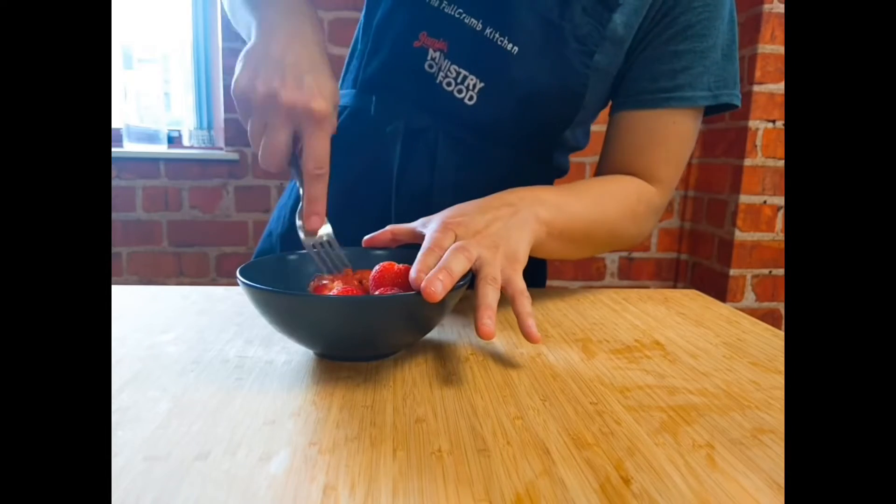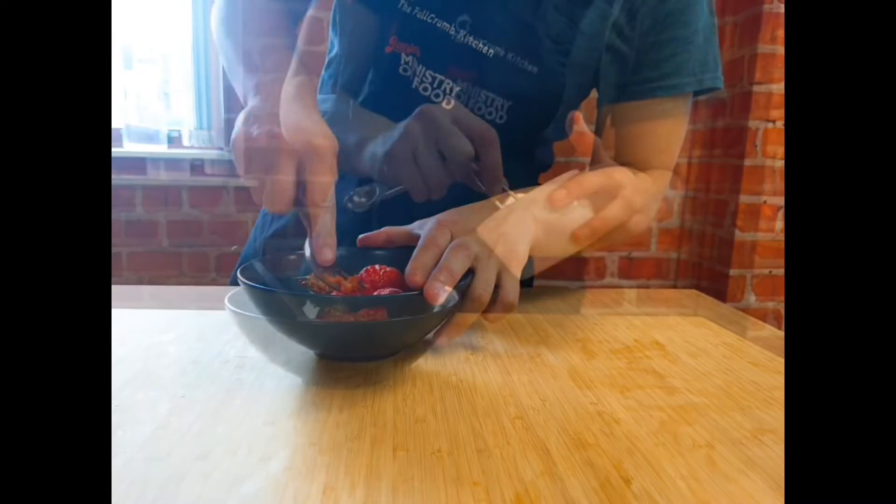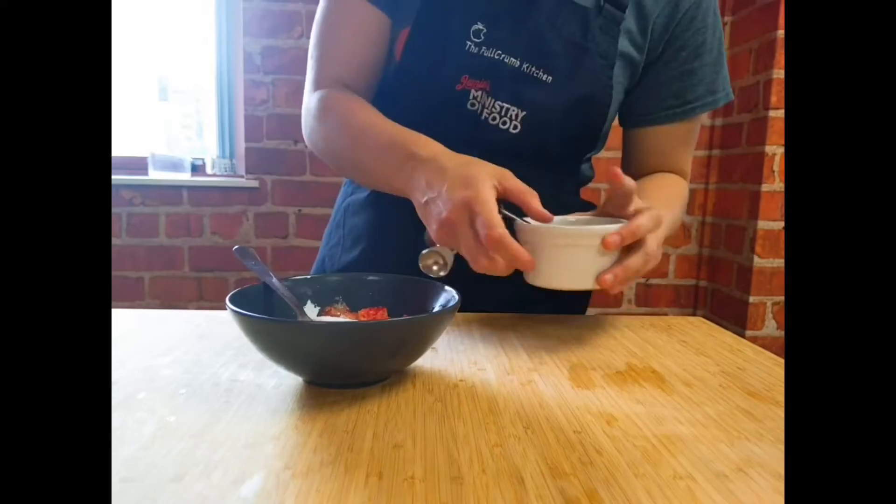Separate half your strawberries and squash with a fork to form a puree. Add in sugar and a squeeze of lime.